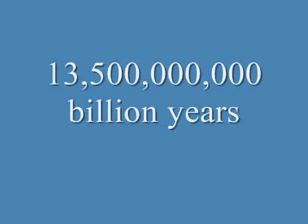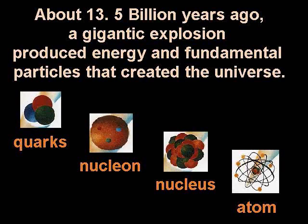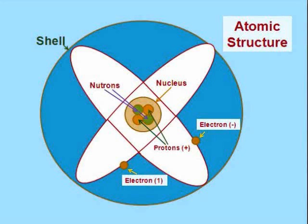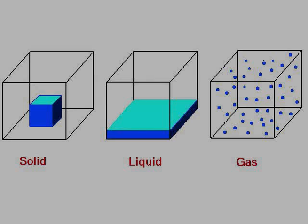Remember, in American English, one billion is one with nine zeros. So what was created 13.5 billion years ago? All the energy and fundamental particles were created. These particles in physics are called quarks. Quarks make up protons, neutrons, and electrons, which form atoms. Atoms make molecules. Molecules make solids, liquids, and gases — things that make up the earth.